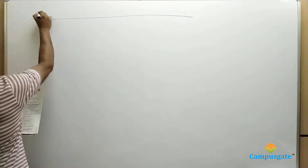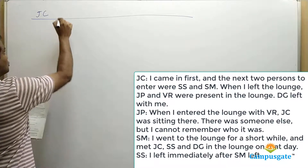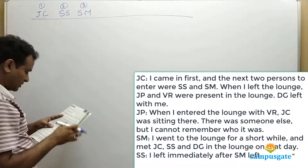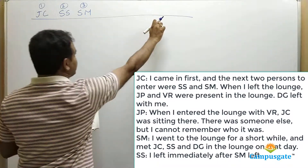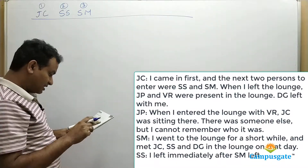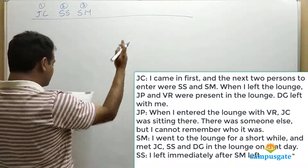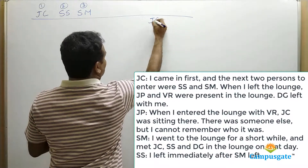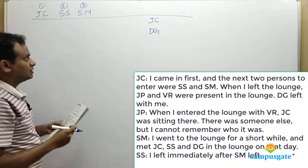The first clue: JC says 'I came in first.' So JC is the first person to arrive. The next two persons to enter were SS and SM — that is already fixed. When JC left the lounge, JP and VR were present, and SS and SM must have already left before JC's departure. DG left with JC, meaning DG must have arrived sometime before JC left — after SM, who was the third person to arrive.